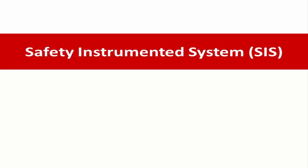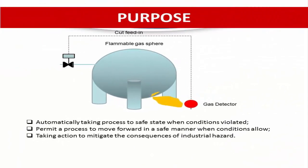Safety Instrumented System, or SIS. The definition of the Safety Instrumented System as defined in ANSI/ISA 84.00.01 or IEC 61511 is an instrument system used to implement one or more Safety Instrumented Functions, or SIFs. A SIS is composed of any combination of a sensor, logic solver, and final element.